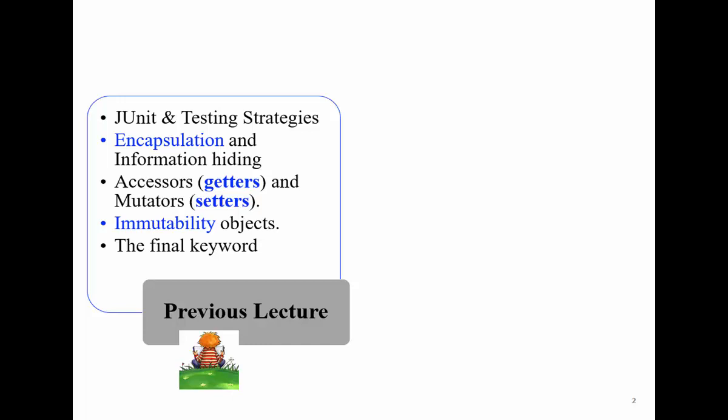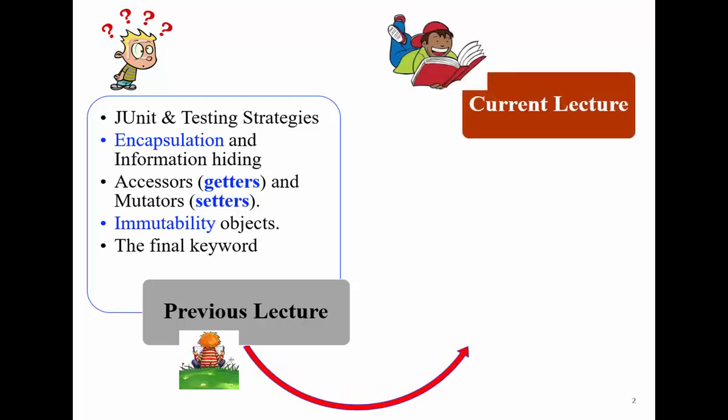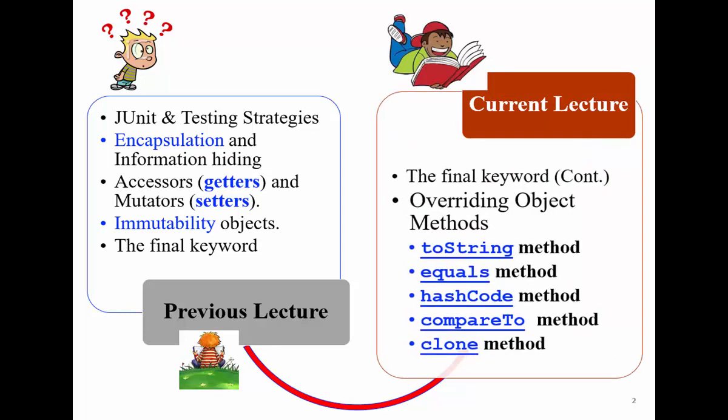We closed the last lecture by discussing the final keyword. I encourage all of you who joined recently to go to Moodle and review all the previous topics. In one lecture we are not only covering one topic — we are still reviewing background materials and injecting new Java concepts. Today, we will finalize the final keyword and move on to the new topic: overriding Object methods.